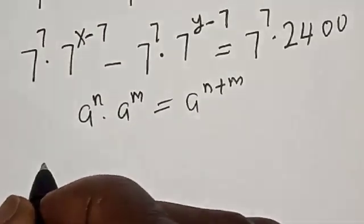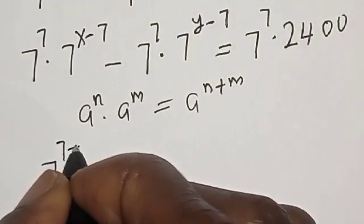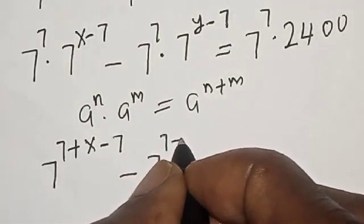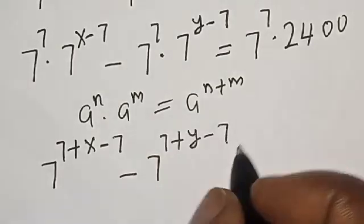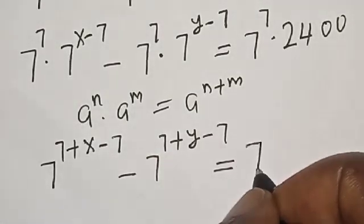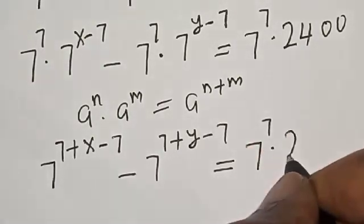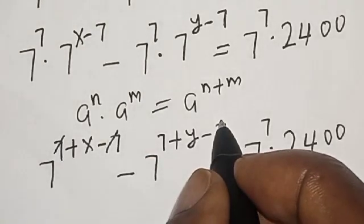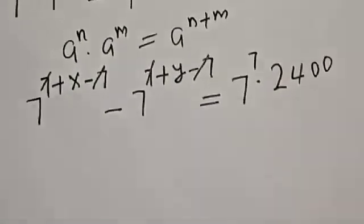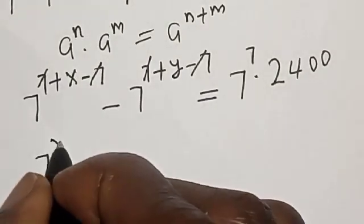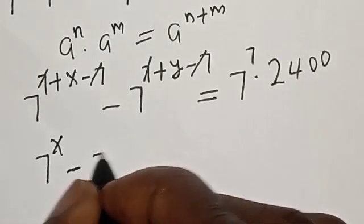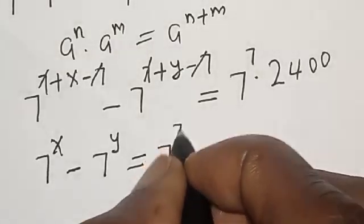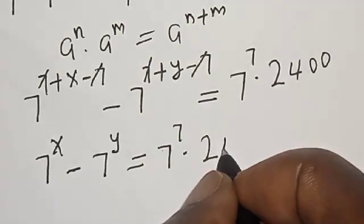Our equation becomes 7 raised to power 7 plus x minus 7, minus 7 raised to power 7 plus y minus 7, is equal to 7^7 multiplied by 2400. The 7s cancel, so 7^x minus 7^y is equal to 7^7 multiplied by 2400.